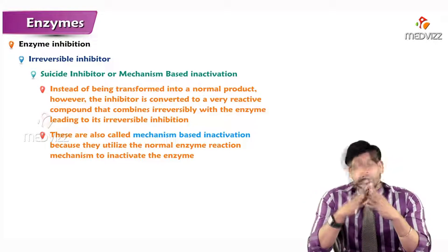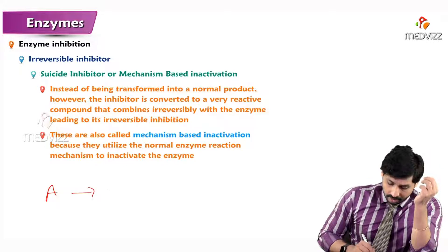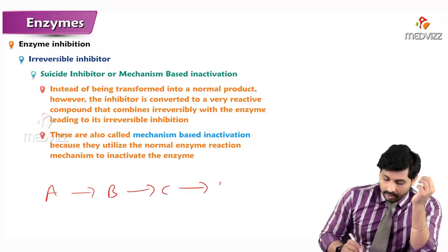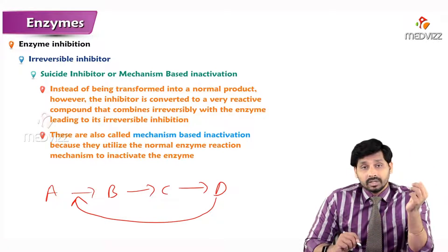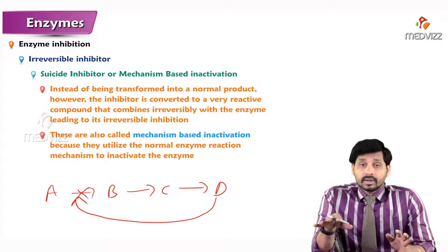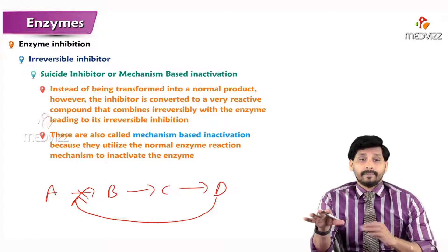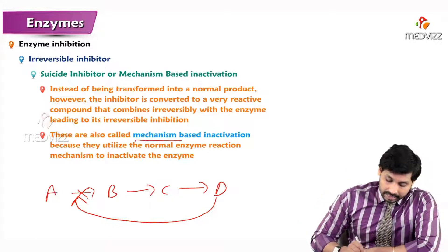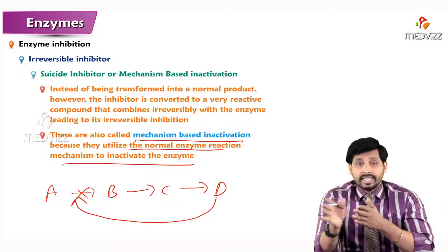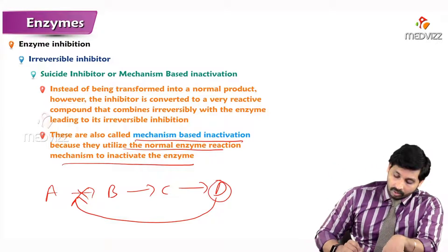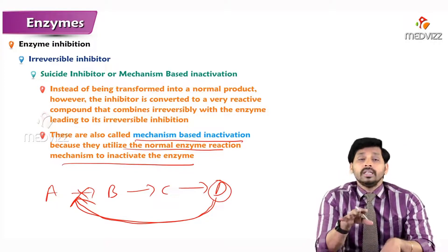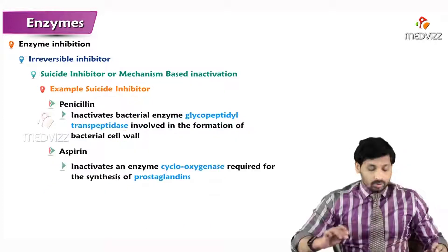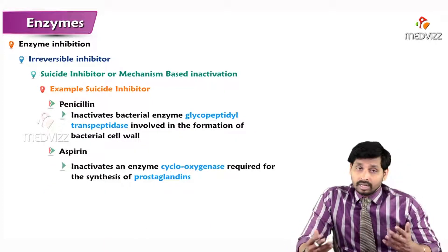In suicide inhibition, like feedback inhibition, the end product — for example in a pathway A→B→C→D — binds to the first enzyme of the reaction and inhibits further proceeding. This is why it is called mechanism-based inactivation: it utilizes the normal enzyme reaction mechanism to inactivate the enzyme. The first reaction takes place, but the end product binds back to the earlier enzyme and stops the reaction.